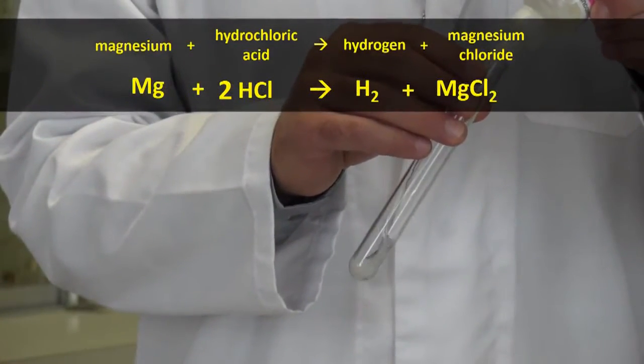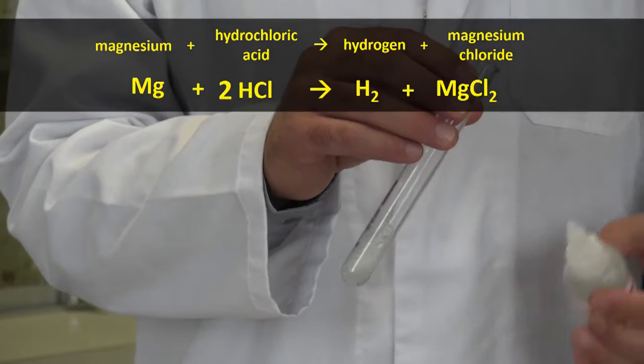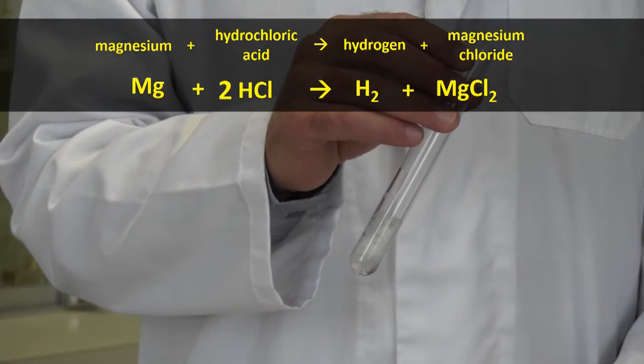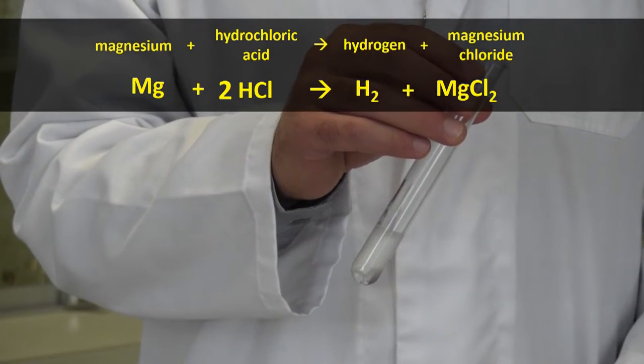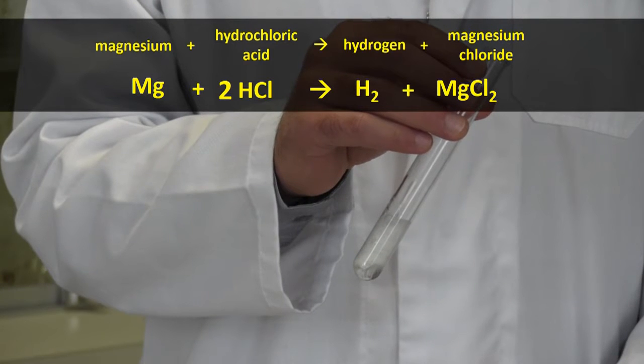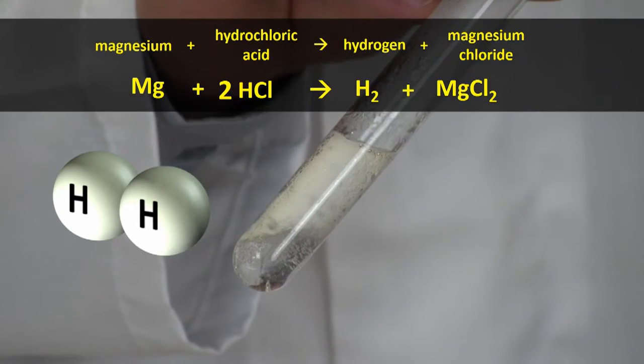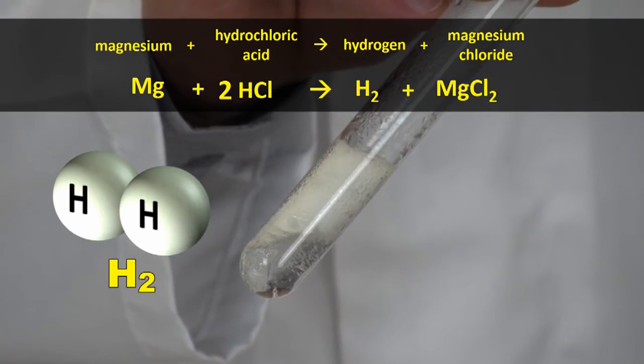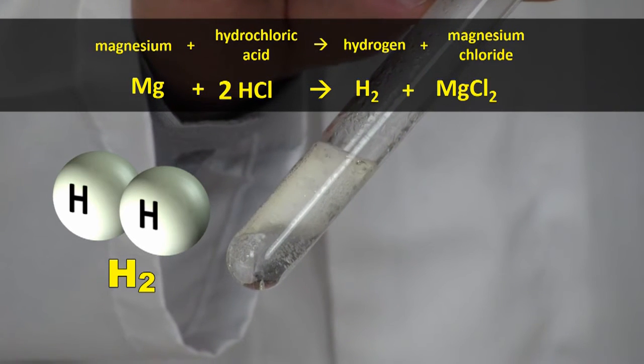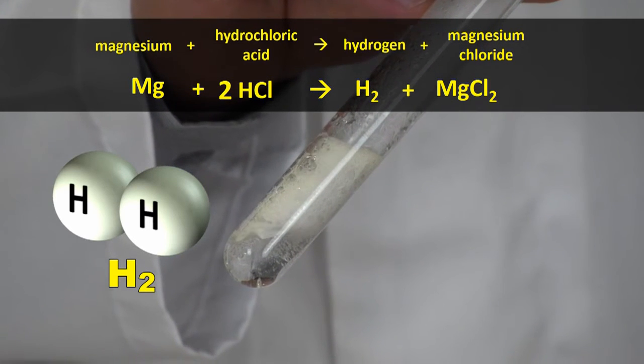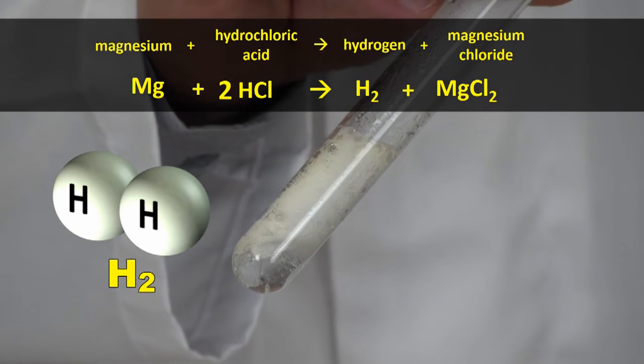In this chemical reaction between hydrochloric acid and magnesium, hydrogen gas is being produced. In hydrogen gas, the hydrogen atoms always join up in pairs, and we write the chemical formula as H2. So the question is, why do hydrogen atoms always join up in pairs, and what makes them join together?